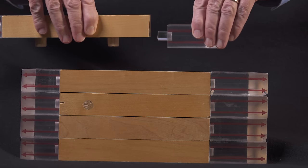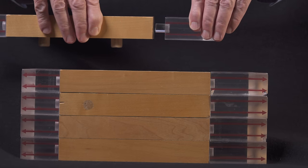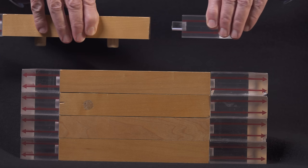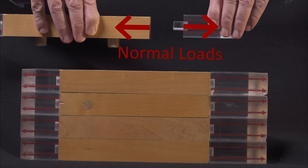In contrast, forces that act normal to a surface, like those produced by these bending stresses, are called normal loads, and we represent them using arrows that have symmetrical heads.